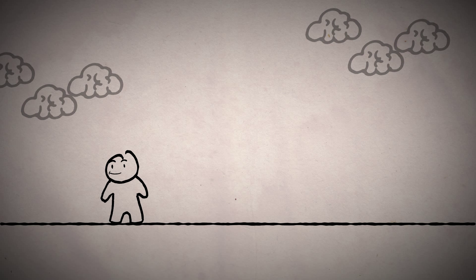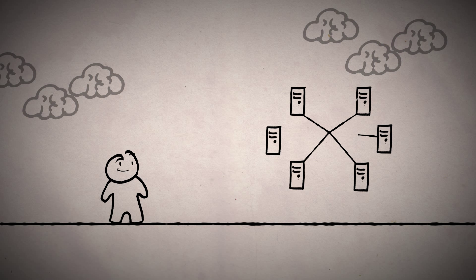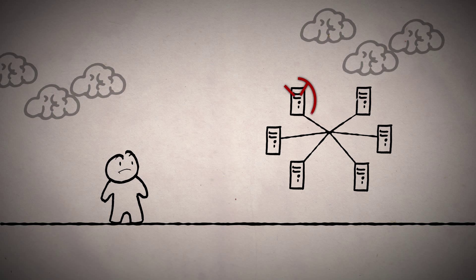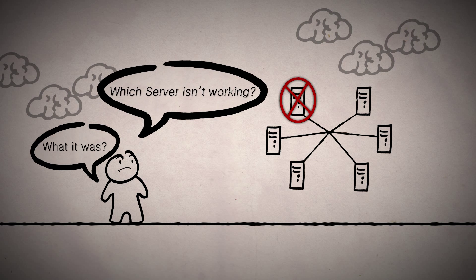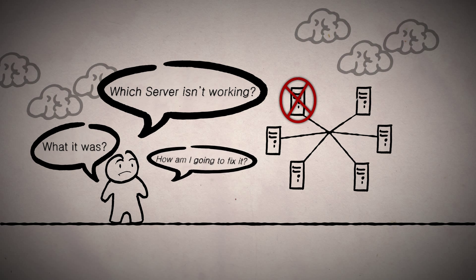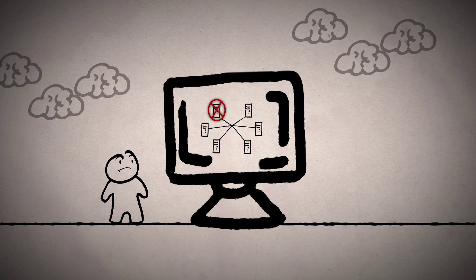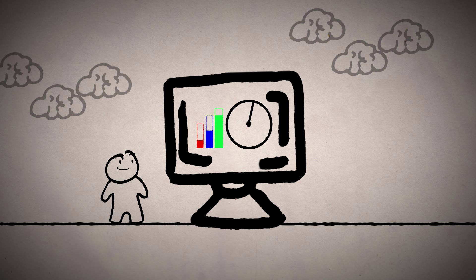Here's an example. Let's say you have a network of servers and workstations. When something goes wrong on a server, you're left wondering what it was, which server isn't working, and how am I going to fix it? What Nagios does is allows you to monitor different server metrics to determine their status.